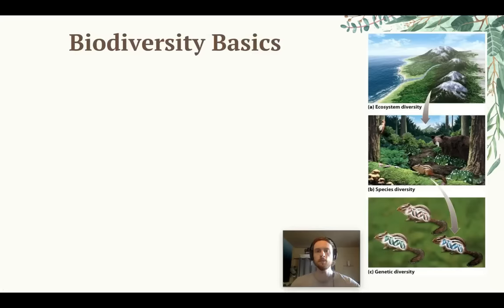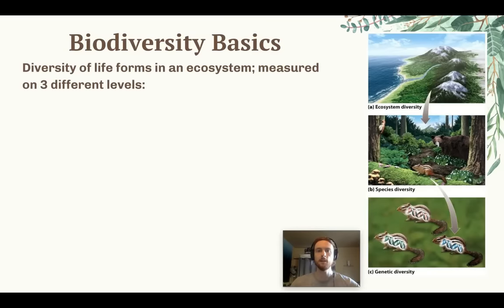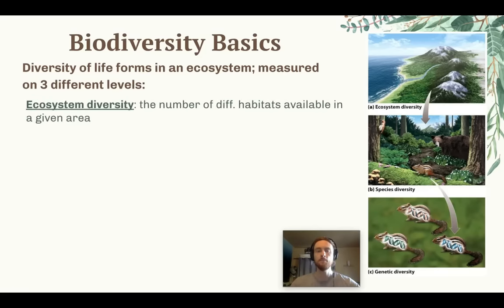Biodiversity is the diversity of life in a given ecosystem, and we can measure it on three different levels or scales. The first and biggest level of biodiversity is ecosystem diversity, which is the number of different habitats that are available in a given area.